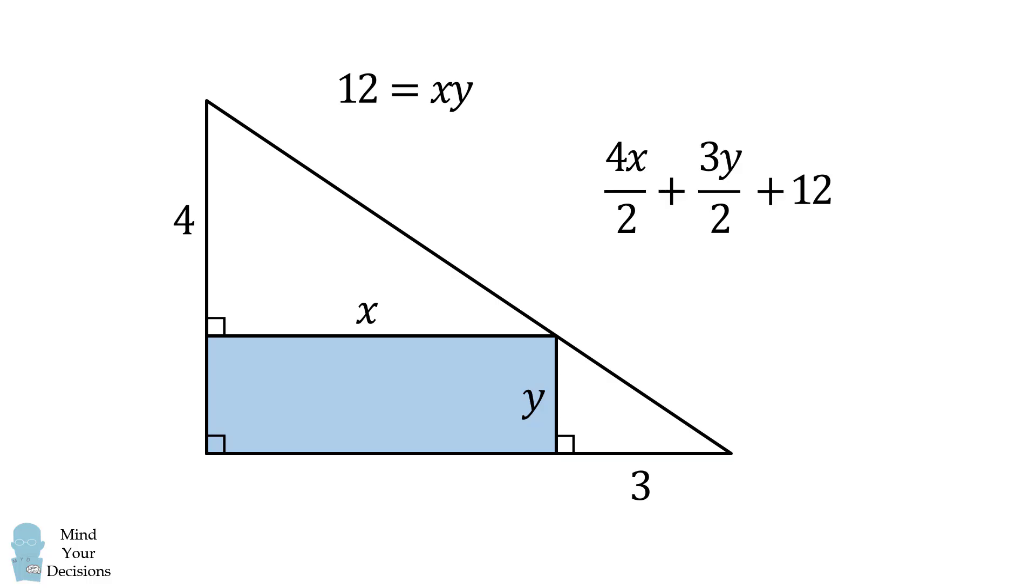Then, we can solve this equation for Y. Y is equal to 12 over X. We can then substitute in for Y. We will then simplify this expression. It'll be equal to 18 divided by X. We now have a formula for the area of the large triangle just in terms of the variable X. It'll be equal to 2X plus 18 over X plus 12. We'll say this is f of X, and that's the area of the large triangle.